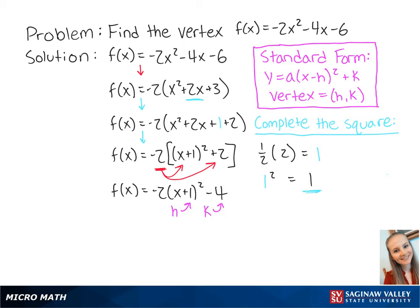Now that we have our h and our k, we know that the vertex is (-1, -4).